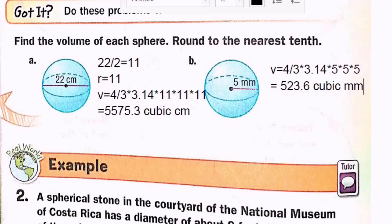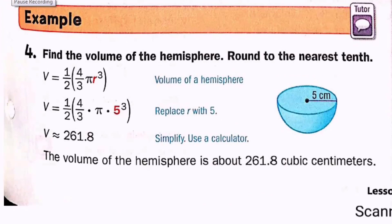Now let's take an example for the hemisphere. Example 4, page 607: find the volume of a hemisphere, rounded to the nearest tenth. I write the formula: volume = 1 over 2 × 4 over 3 × pi × r³. Instead of 1 over 2 × 4 over 3, I can write 2 over 3. Substituting: 1 over 2 × 4 over 3 × 3.14 × 5³ = 1 over 2 × 4 over 3 × 3.14 × 5 × 5 × 5. The answer is approximately 261.8 cubic centimeters, or cm³.